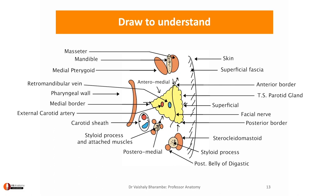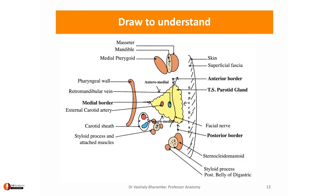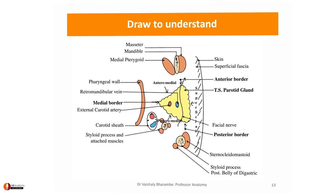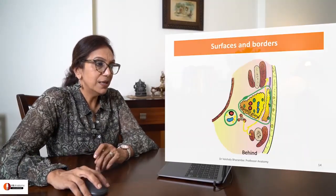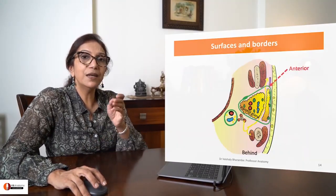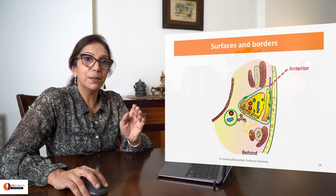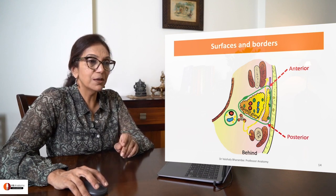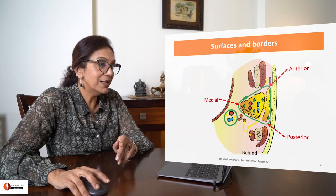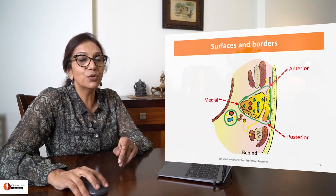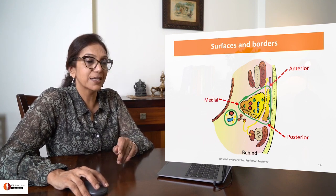Having drawn this diagram, it will help you a lot to understand the rest of the anatomy of parotid gland. Having understood this, let's come back to the topic of surfaces and borders. Here is your anterior border directed towards the mandible, here is your posterior border directed towards the mastoid process, and here is the medial border directed towards the wall of pharynx.